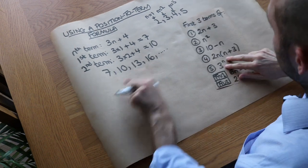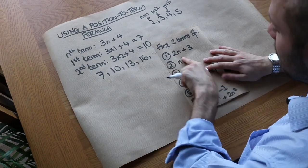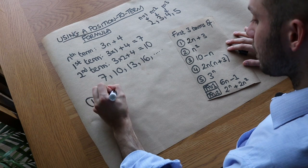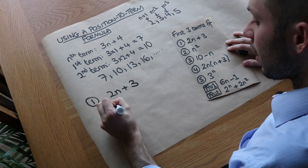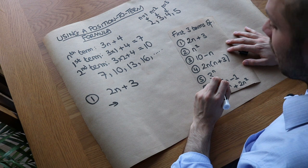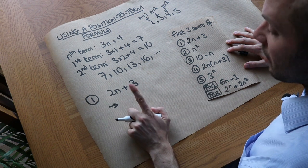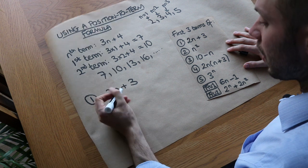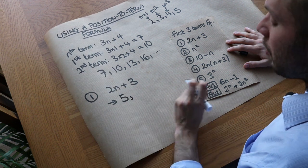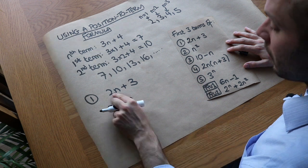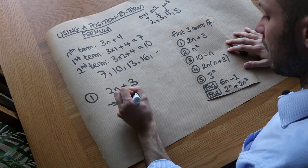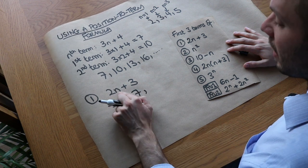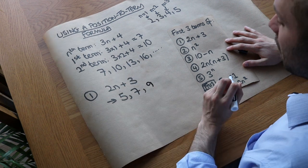Now let's do a few examples, finding the first three terms of sequences with different nth term formulas. First: 2n plus 3. The first term is where n is 1, so 2 times 1 plus 3 — that's 2 plus 3 equals 5. The second term, n is 2: 2 times 2 plus 3 equals 7. The third term: 2 times 3 plus 3 — 6 plus 3 equals 9. So the first three terms are 5, 7, 9.